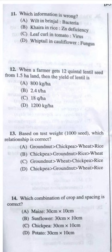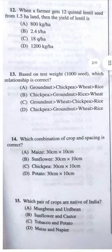Question 12: When a farmer gets 12 quintals of lentil seed from 1.5 hectare land, the yield of lentil — answer should be A, 800 kg per hectare. Convert quintals to kg: 1200 kg divided by 1.5 hectare = 800 kg per hectare.